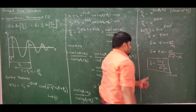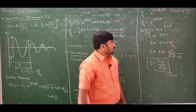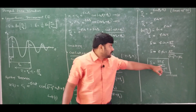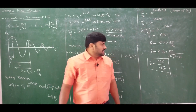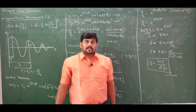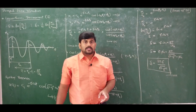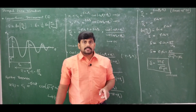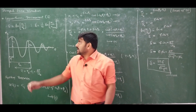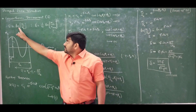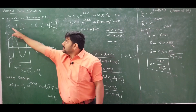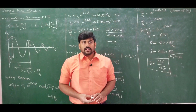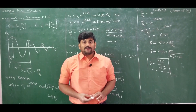This is the derivation for logarithmic decrement, establishing the relationship between delta and the damping ratio zeta. In practice, if you know c, m, and k, you can compute critical damping cc = 2mωn or 2√(mk), then zeta = c/cc, then delta, and finally the ratio x1/x2 = e^delta. Numerical problems will be covered in the next lecture. Thank you.